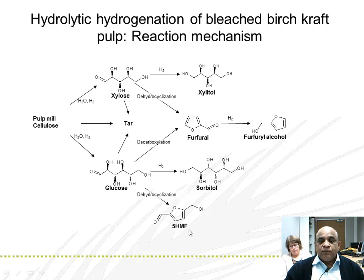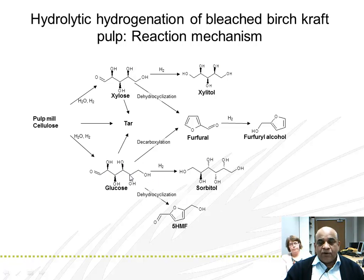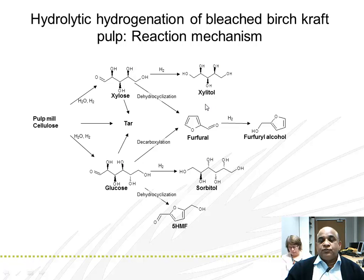Dehydration and cyclization of glucose leads to 5-hydroxymethylfurfural (HMF), and hydrogenation of glucose forms sorbitol. Decarboxylation of glucose gives furfural.